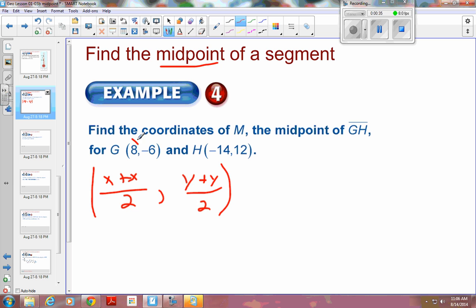So here's an x, here's an x. So I'm going to take my 8 plus my negative 14, and I'm going to divide it by 2. And then we're going to take, here is a y, here is a y. I'm going to take my negative 6. I'm going to add my 12. Negative 6 plus 12, and divide by 2.